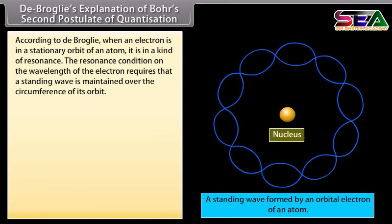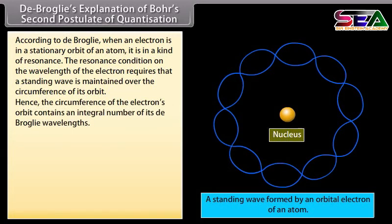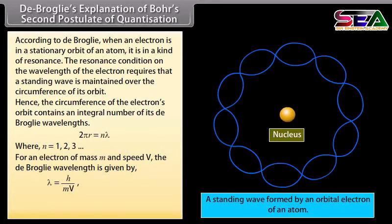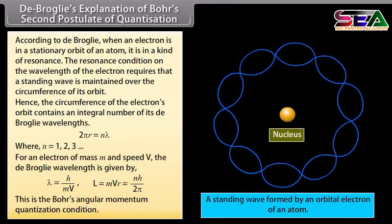De Broglie's explanation of Bohr's second postulate of quantization: De Broglie explained the quantization condition on angular momentum of an orbiting electron. According to De Broglie, when an electron is in a stationary orbit, it is in a kind of resonance. The resonance condition requires a standing wave to be maintained over the circumference of its orbit: 2πR = Nλ, where N = 1, 2, 3, ... For an electron of mass m and speed v, the De Broglie wavelength is h/mv. This gives mvR = Nh/2π, which is Bohr's angular momentum quantization condition.